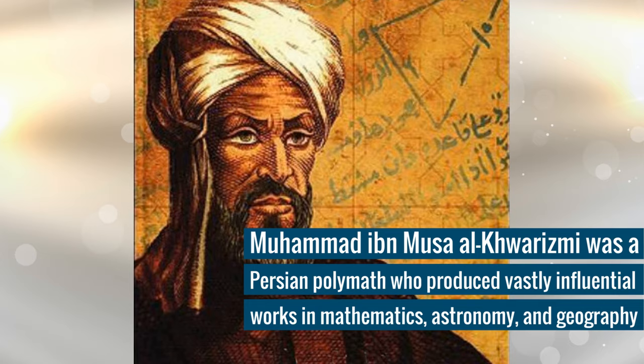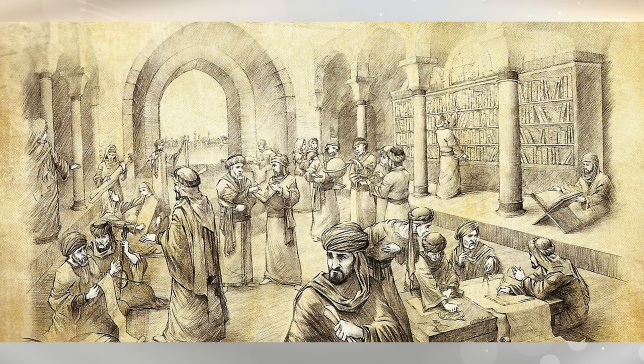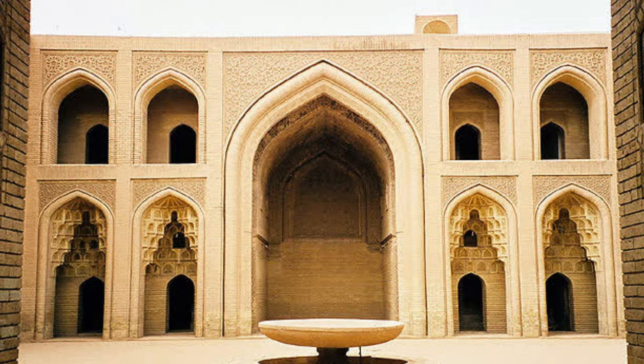Muhammad Ibn Musa Al-Khawarizmi was a Persian polymath who produced vastly influential works in mathematics, astronomy and geography. Around 820 CE, he was appointed as the astronomer and head of the library of the House of Wisdom in Baghdad.